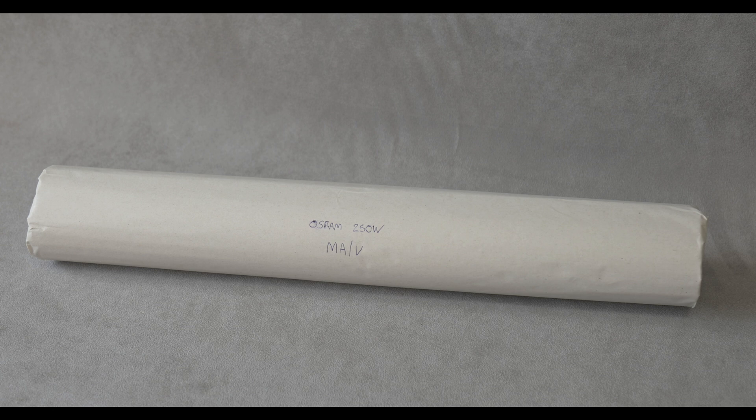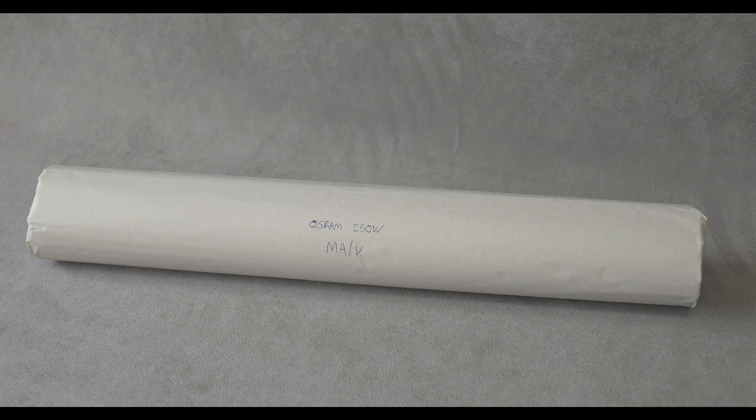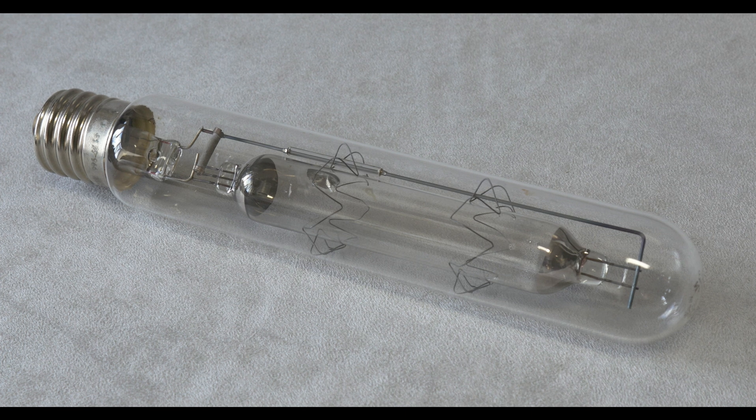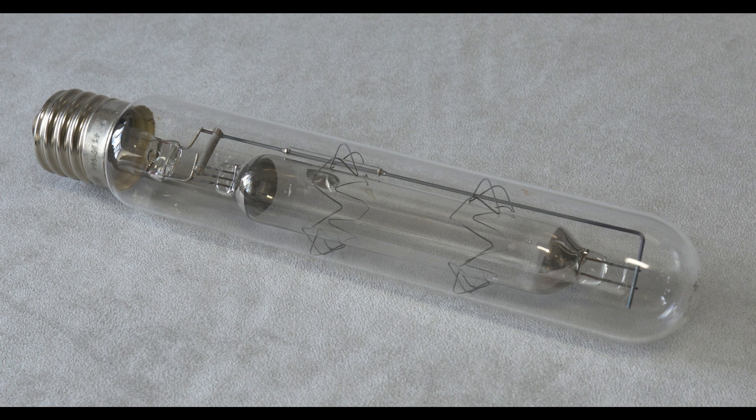G'day folks, it's me again. It's another lamp video, but you'll like this one. It's a really old interesting one. Let's have a look. This is a 250 watt Osram MA/V lamp. The MA means it's a medium pressure lamp and the V means it's for vertical burning only.